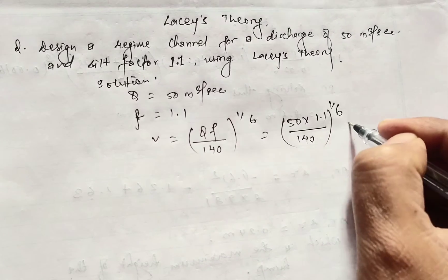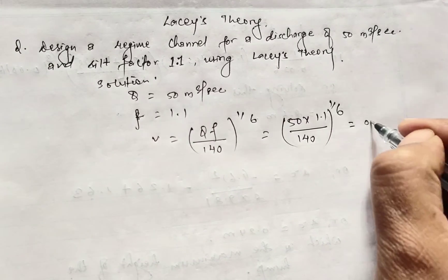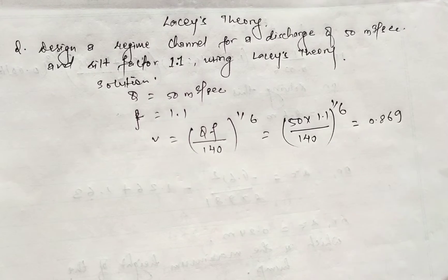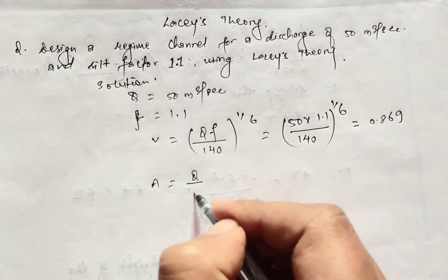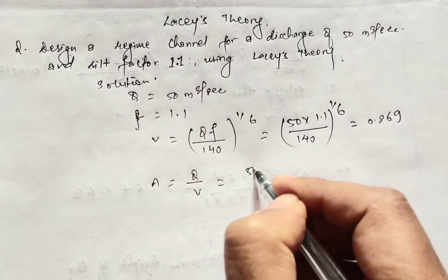On solving this the result will be 0.869. Now the area A equals Q divided by velocity, so 50 divided by 0.869 equals 56.3 meter square.